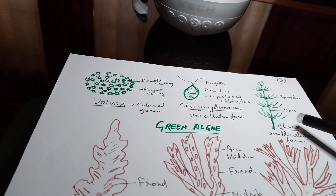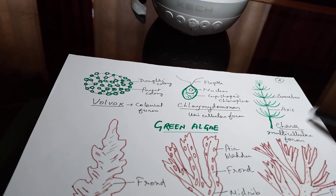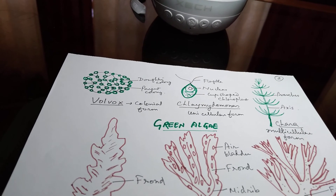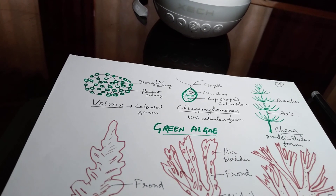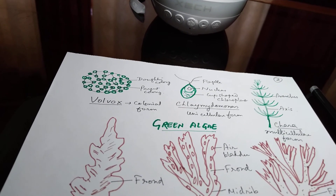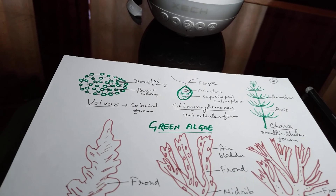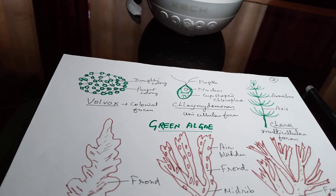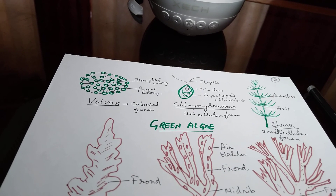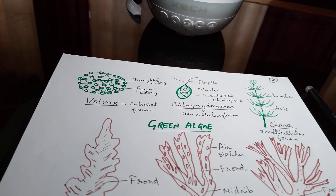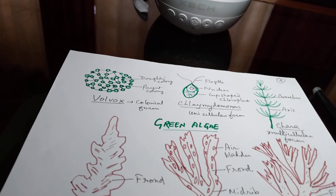तो इसके बाद हम लोग brown algae और red algae — यानि Phaeophyceae और Rhodophyceae को next lecture में पढ़ेंगे। इसके पहले आप इसको practice कर लेंगे — इसी तरह का figure बनाके दो-तीन बार practice करेंगे, और Chlorophyceae का general characters पढ़ लेंगे। Thank you students.